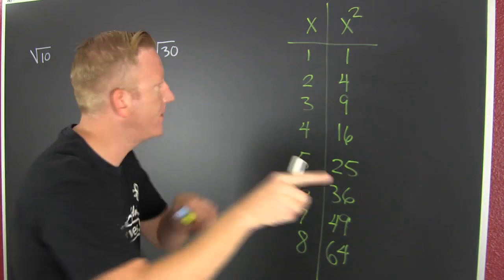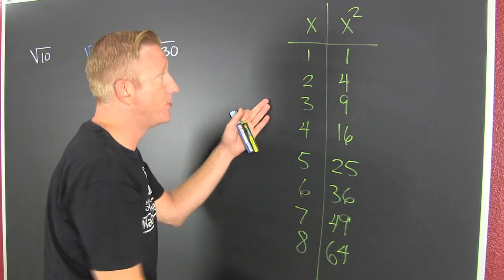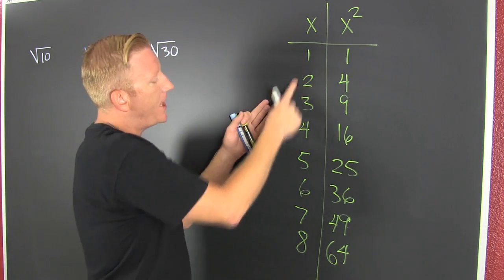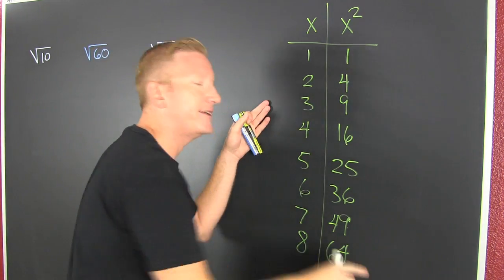What are we looking at? We're looking at this. I've drawn you a little table. What is it? These are your x values. Those are your x squared values.